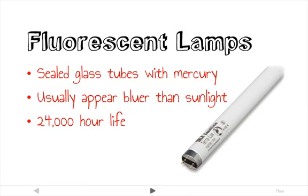Fluorescent lamps are much more efficient. Basically, it's a sealed glass tube filled with mercury. An electrical discharge between the ends of the tube vaporizes the mercury, creating ultraviolet light that causes the bulb to glow. The color of the light can vary depending on the composition of the chemicals inside. Fluorescent lamps usually appear on the bluer side than sunlight, but they have come quite a long way recently. They provide five times the amount of light for the same energy as an incandescent lamp, give off less heat, and usually have about a 24,000-hour lifespan.